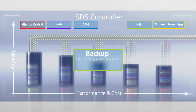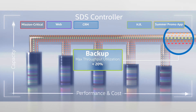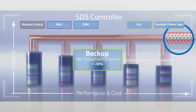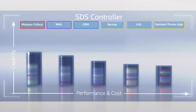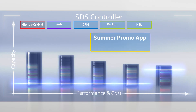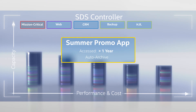Administrators could also set infrastructure-wide policies that would automatically be enforced, such as throttling backup throughput to ensure a high quality of service for critical apps and services. The SDS controller could also enforce policies that identify if a particular app's data is no longer active, automatically archiving that data while releasing valuable storage capacity for other needs.